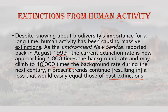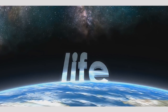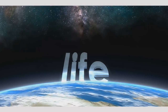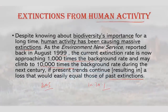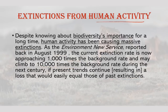The Millennium Ecosystem Assessment, released in March 2005, highlighted a substantial and largely irreversible loss in the diversity of life on earth, with some 10–30% of mammal, bird and amphibian species threatened with extinction due to human actions. The Worldwide Fund for Nature added that the Earth is unable to keep up in the struggle to regenerate from the demands we place on it.